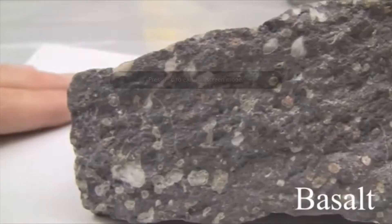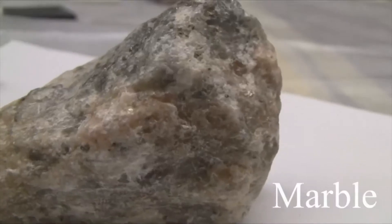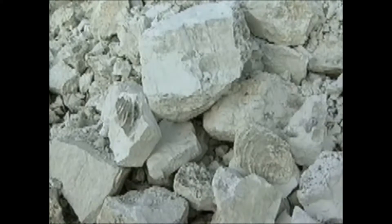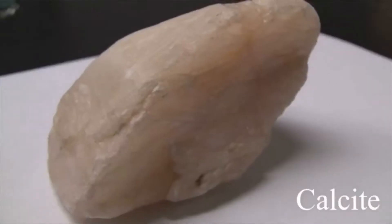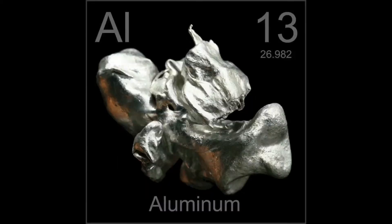Rocks, on the other hand, are combinations of homogeneous substances called minerals. Some rocks, for instance limestone, consist of a single mineral only, but the majority of rocks consist of several minerals in varying proportions. Although more than 2,000 minerals have been found, only a few are abundantly available to us, such as silicon and aluminum.